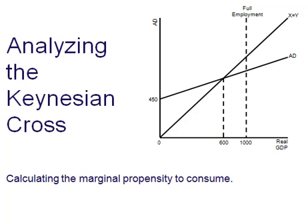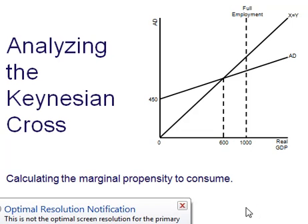Hello and welcome to the first in a series of videos on analyzing the Keynesian cross. In this video we're going to look at how to calculate the marginal propensity to consume.